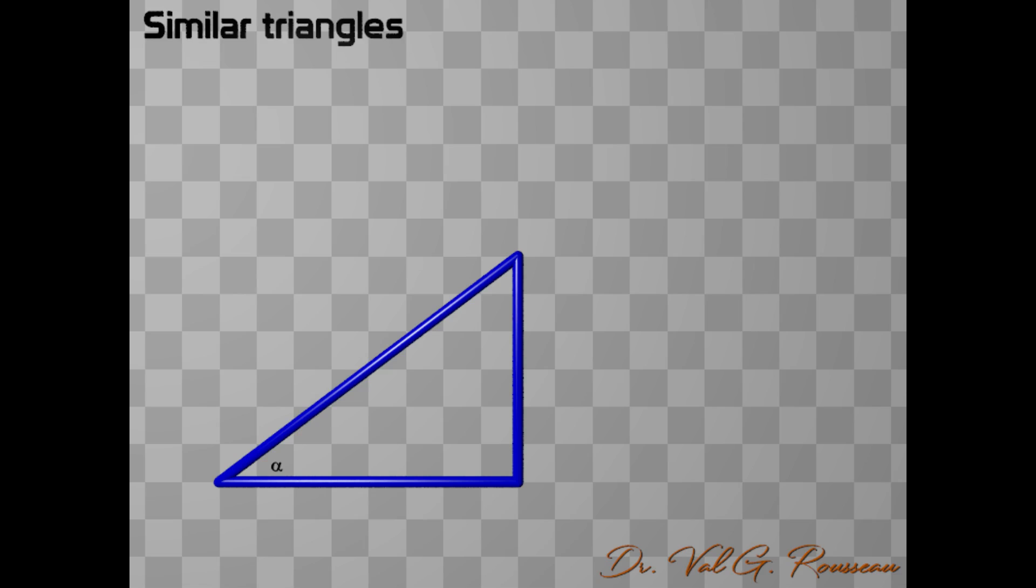We can easily count the squares and see that the adjacent side measures 8 squares, while the opposite side measures 6 squares. For the hypotenuse, I'll let you apply the Pythagorean theorem, and you should find that it measures exactly 10 squares.